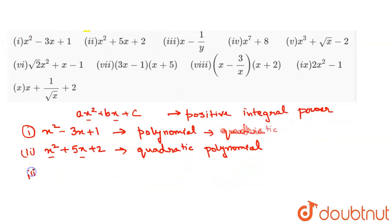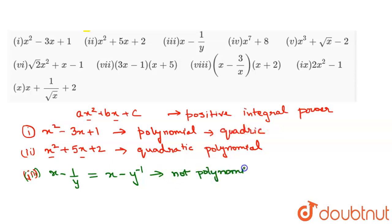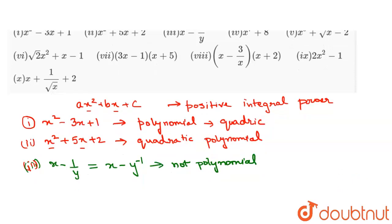The third question is x minus 1 by y. Here, the variable x has a positive integral power, but 1/y can be written as y to the power of minus 1. Since this variable y has a negative power, any expression having a negative power is not a polynomial. Therefore this is not a polynomial.